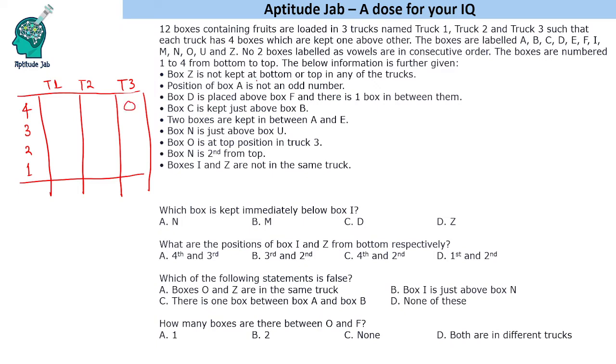Then we are also given that N is second from top. So N can be in any of these three boxes and any of these three trucks and N is just above U. So we will have N and U together. Then we are given position of box A is not an odd number. So box A can be second or fourth. Then it is given that two boxes between A and E. Suppose A is at second position 1 to E is not possible. So that means A is at the fourth position and E is at the first position. So A is top and E is at bottom.